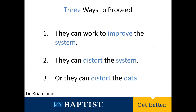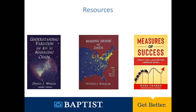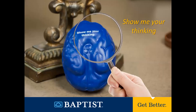There are three things that most people do when they proceed to go after a goal: they can work to improve the system, if they know how; many times, unintentionally, they will end up distorting the system or distorting the data. Here are three great resources, and until next time, show me your thinking. Thank you.